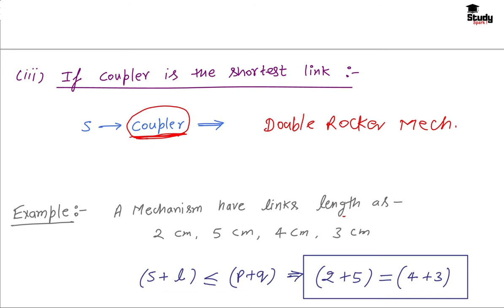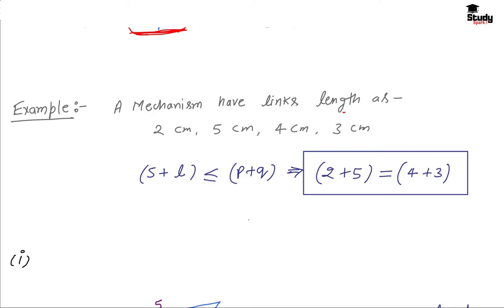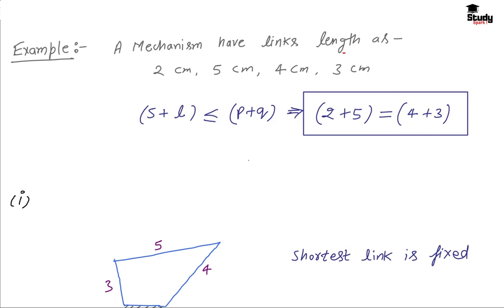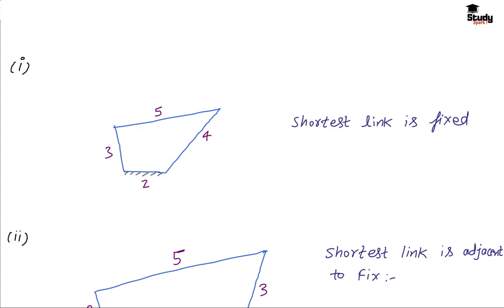Let's see an example. A mechanism has link lengths 2 cm, 5 cm, 4 cm, and 3 cm. First, check Grashof's Law: shortest = 2, longest = 5, so 5 + 2 = 7, and 4 + 3 = 7. Since 7 ≤ 7, Grashof's Law is satisfied. Case 1: if the 2 cm link (shortest) is fixed, both input and output links rotate 360° — we get a double crank mechanism. Case 2: if the 4 cm link is fixed (shortest link adjacent to fixed), the 2 cm link rotates fully but link 3 only oscillates — we get a crank-rocker mechanism.